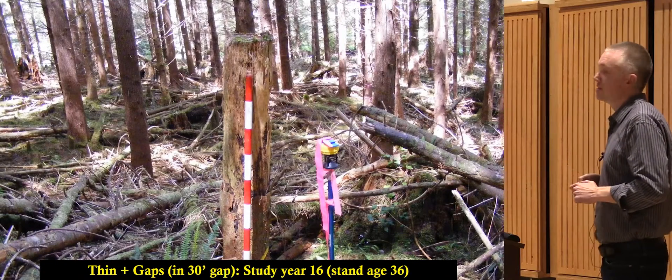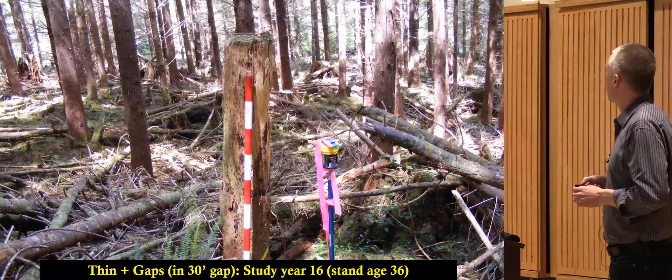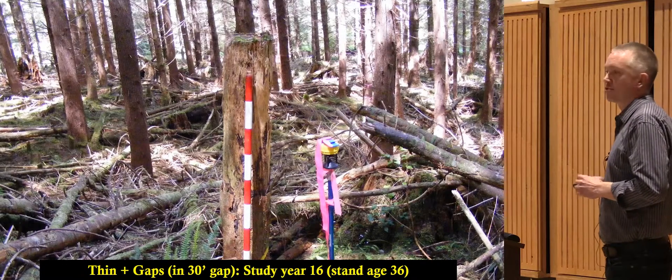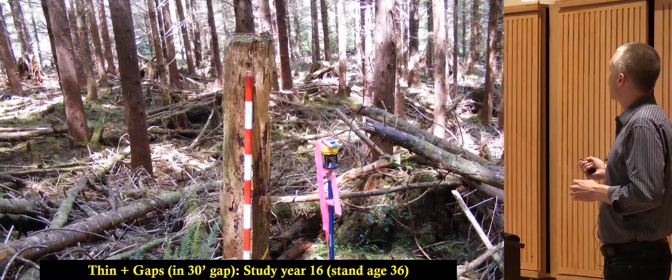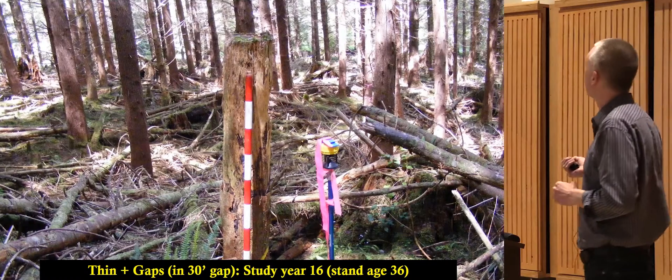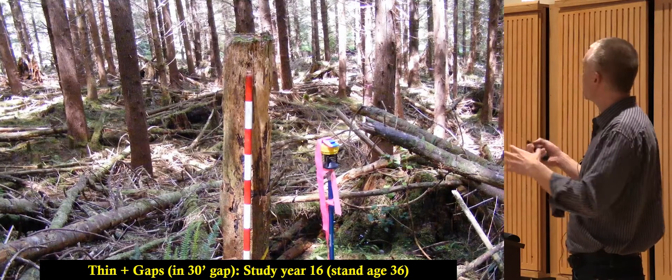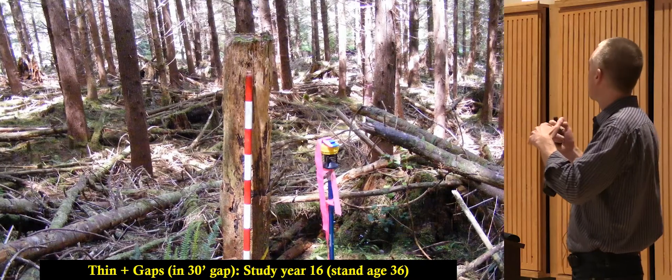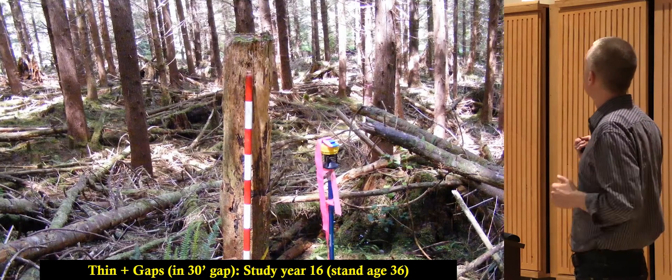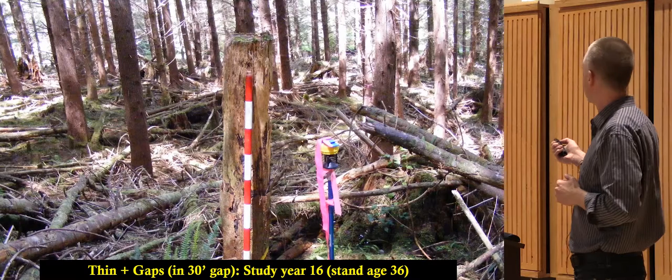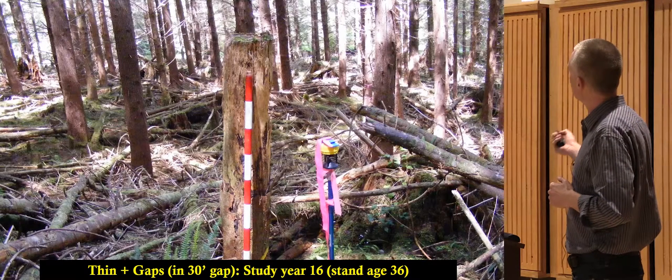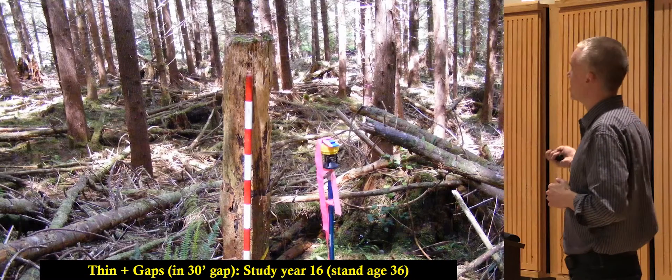Here's our treatment where we combined these small gaps with thinning, thinned to 300 trees per acre. This is actually standing right in the middle of a 30 foot gap, but you can barely tell it's a gap because the trees adjacent to this gap, their branches have reached out and basically closed over. Even in this 30 foot gap, there's very little sunlight reaching the forest floor, not enough to sustain any kind of understory.